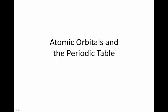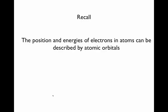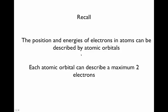Atomic orbitals in the periodic table. If you recall, we have an idea about the position and energy of electrons. To recap, the positions and energies of electrons in atoms can be described by atomic orbitals which come out of the Schrödinger equation and each of these orbitals can describe a maximum of two electrons.